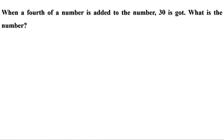Next problem: when a fourth of a number is added to the number, 30 is obtained. What is the number? That means number plus one-fourth of that number equals 30. When one-fourth of a number is added to the number, it is 1 and one-fourth times the number. Converting to an improper fraction: 1¼ equals 5/4. So when the number is multiplied by 5/4, the result is 30.